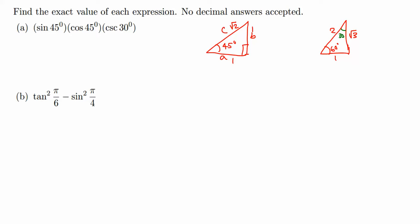For 30 degrees this is adjacent, opposite, hypotenuse. Now let's find the values of sine 45, cosine 45, cosecant 30 degrees. Sine is b over c, so 1 over root 2. If you already know the value of sine 45 you don't have to draw these triangles. Times cosine 45, a over c, 1 over root 2.